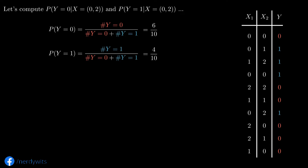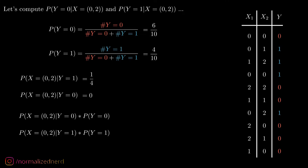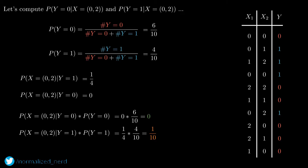Now let's compute the likelihoods. First I'll compute the probability of x given y equals 1 — we look at all rows where y is 1 and the feature combination is (0, 2). There is only one such entry, so the value is 1/4. Similarly, for y equals 0, there is not a single occurrence where y is 0 and the feature combination is (0, 2), so that likelihood is 0. To find the class label that maximizes the posterior, we multiply likelihood with prior. For class label 0, the numerator is 0; for class label 1, it is 1/10. So class label 1 maximizes our posterior probability.